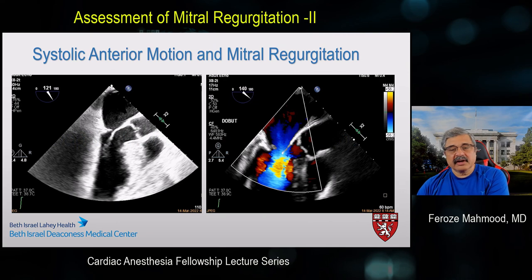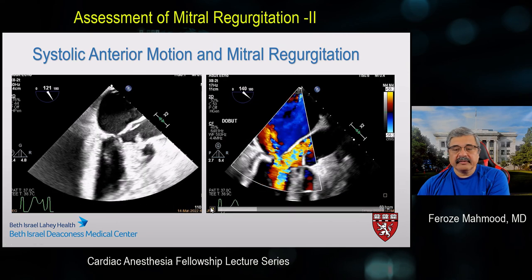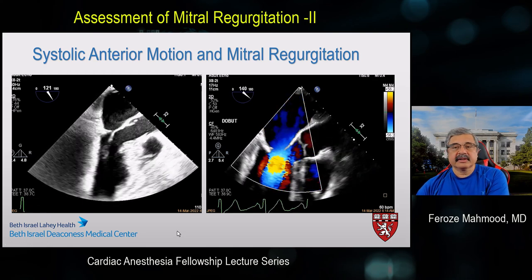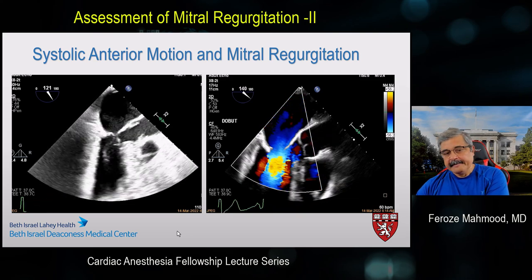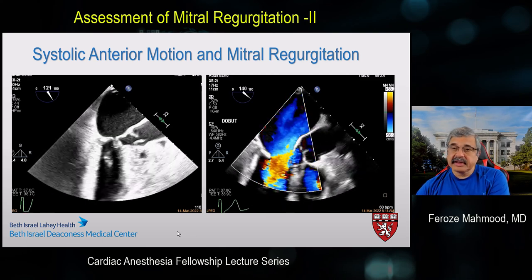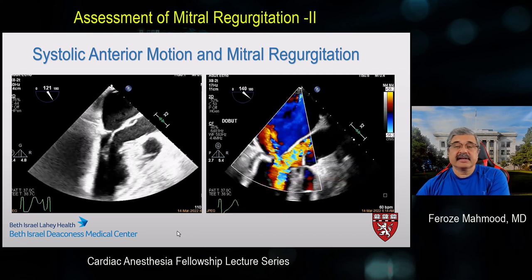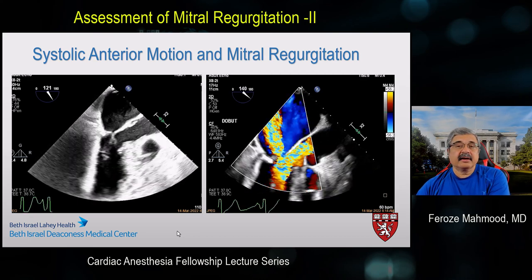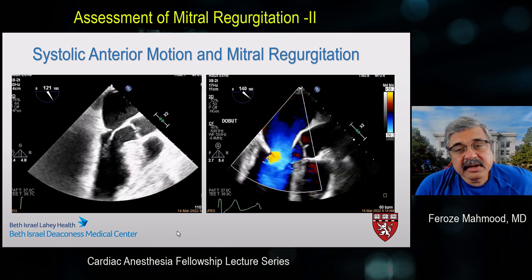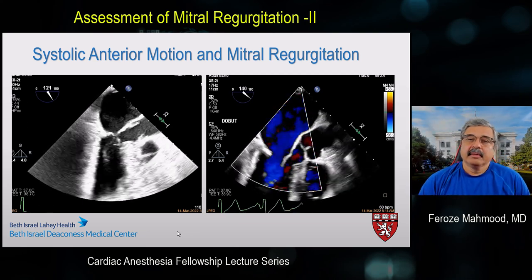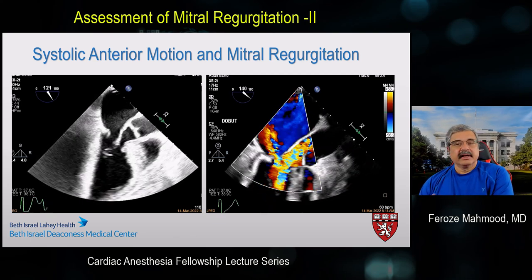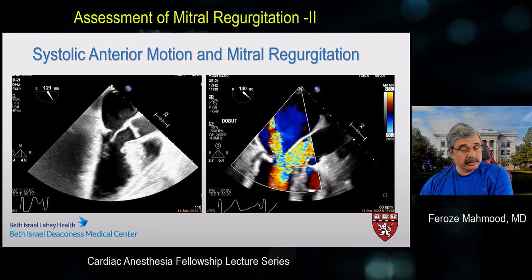Systolic anterior motion (SAM) of the mitral valve is something we often encounter in patients getting septal myomectomies or surgery for hypertrophic cardiomyopathy. SAM is a case of at-risk anatomy — a tall posterior leaflet, a thick interventricular septum — combined with susceptible physiology: tachycardia, hypotension, and reduction in preload. This is an important cause of MR leading to significant hemodynamic instability which all echocardiographers should be aware of.